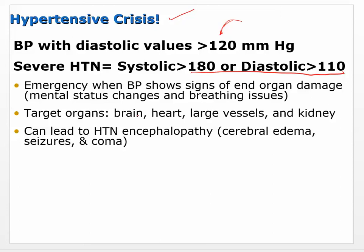Hypertensive encephalopathy is when there's so much pressure in blood going to the brain that it's actually causing fluid to leak out of the vessels and into the brain tissue, causing cerebral edema, which can lead to seizures and coma. That's why this is an emergent situation. If you see somebody with greater than 180 over 110, you don't just say 'eat less salt' — organ damage could be taking place.